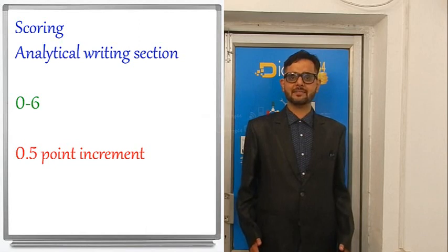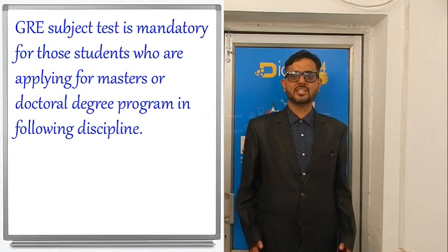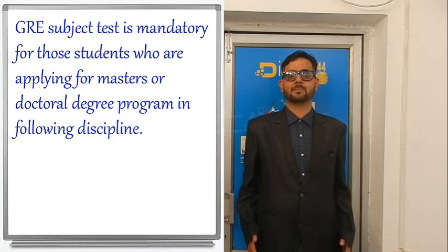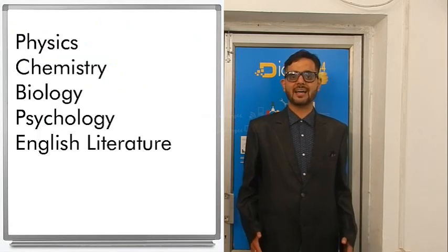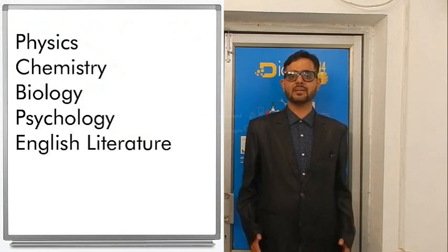What we have discussed so far is all about the GRE general test. There is a GRE subject test as well. The GRE subject test is mandatory for students applying for master's or doctoral degree programs in Physics, Chemistry, Biology, English Literature, and Psychology. For students applying in other disciplines, there is no need to take the GRE subject test.